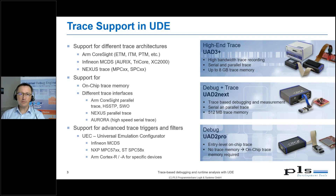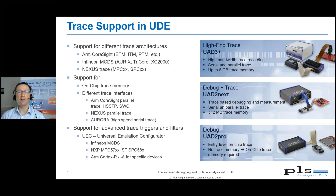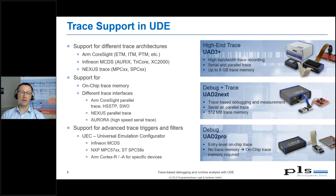Both the UAD2 Next and the UAD3 Plus support dedicated trace interfaces with either plug-in modules or specific trace pods. Both devices have trace memory on board — 512 megabytes for the UAD2 Next, and up to 4 gigabytes currently, with 8 gigabytes planned for the UAD3 Plus. I will not go into further detail in the slides; you'll get a better overview in the real-life demo.